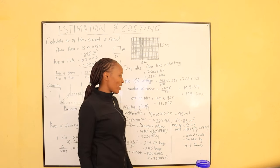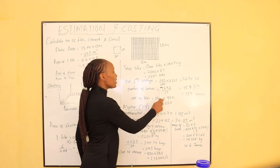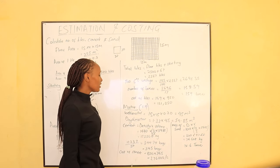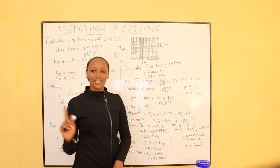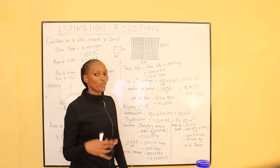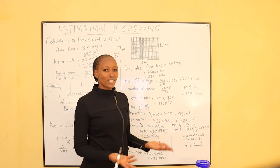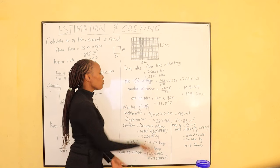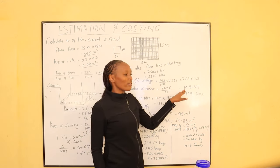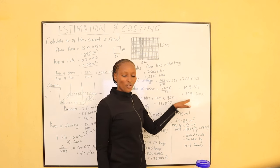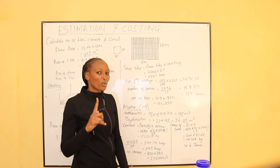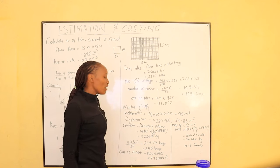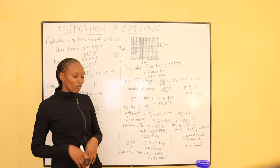The number of boxes required is 2,696 ÷ 17 tiles per box = 158.59 boxes, which we round up to 159 boxes — since you cannot buy a fraction of a box. If one box costs 950 shillings, the total cost of tiles is 159 × 950 = 151,050 shillings. Now that we know the cost of tiles, we need to calculate the mortar — the cement and sand mixture — to fix the tiles to the floor.